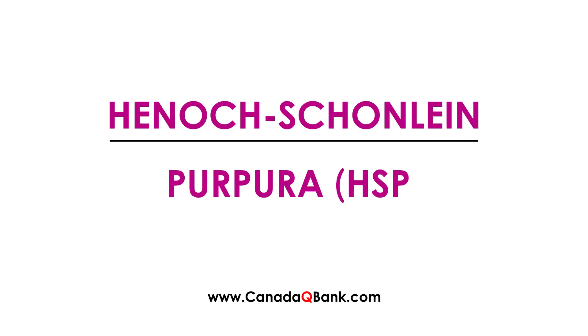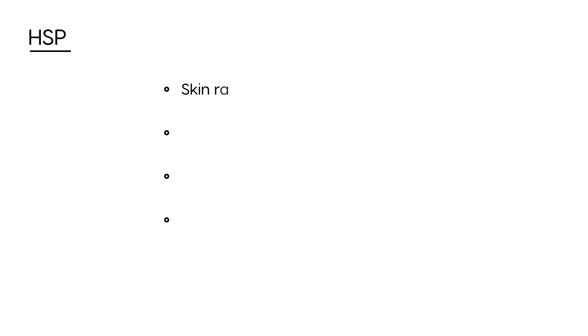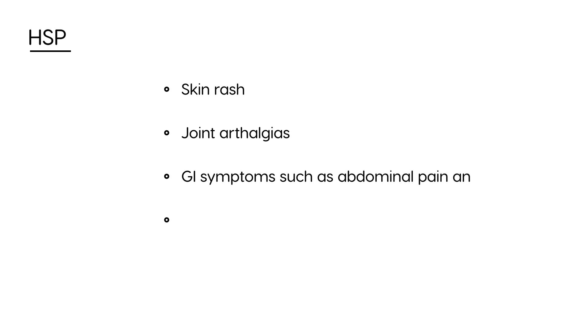Henoch-Schönlein purpura (HSP) is the topic. The goal is to break this down so that when presented with a clinical vignette, you can easily recognize it. There are four things to look at: a skin rash, joint pain (arthralgia), GI symptoms such as abdominal pain and tenderness, and lastly kidney damage if it progresses.